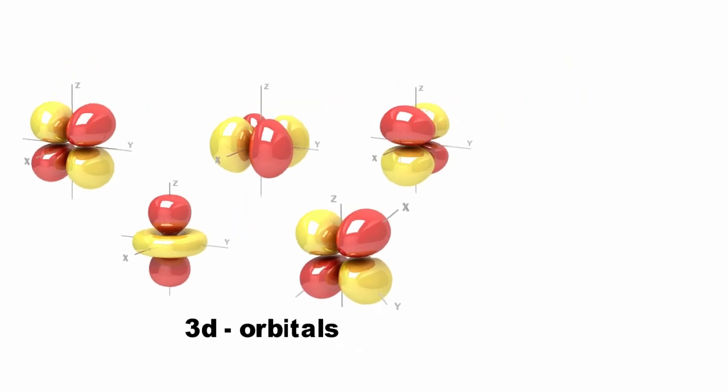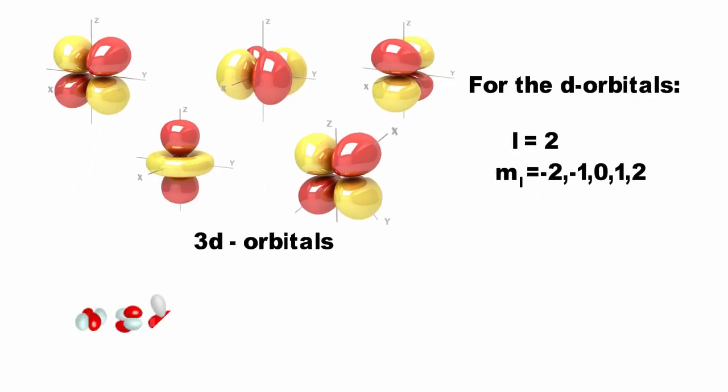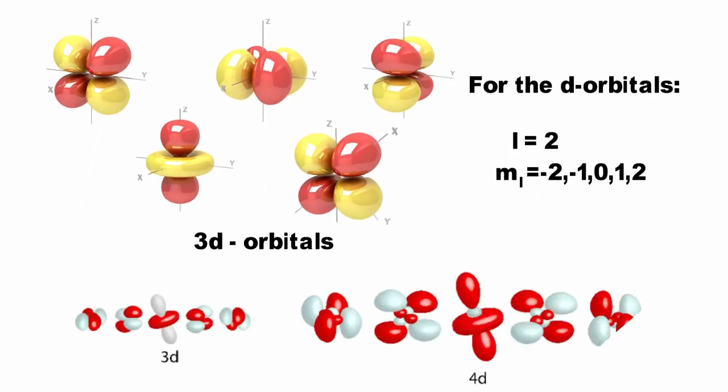The d orbitals have an L value of 2. m sub-L has five values. Therefore, there are five d orbitals for each value of N greater than and equal to 3.